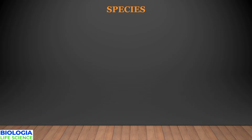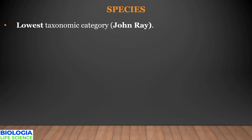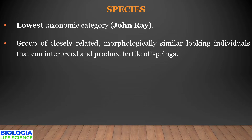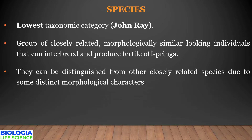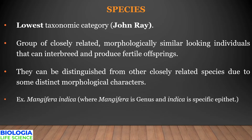Now let's look at the obligate categories individually, starting with the lowest rank — species. It is the basic unit in biological classification. The term species was coined by John Ray, and the biological concept of species was given by Ernest Mayr. According to Mayr, species is a group of closely related individuals with similar morphological, anatomical, and biochemical characters. They share a common gene pool with their ancestors and can interbreed in nature to produce fertile offspring.